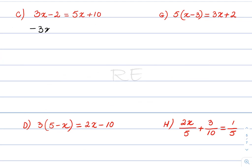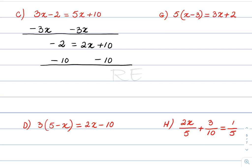For question C, we transpose 3x to the left side, giving negative 2 is equal to 2x plus 10. We subtract 10 from both sides: negative 2 plus negative 10 is negative 12. So negative 12 is equal to 2x. Dividing both sides by 2, x is equal to negative 6.